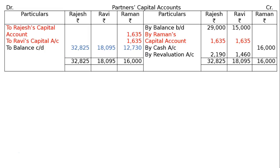Raman's capital totalling is Rs. 16,000, out of which the goodwill premium deducted for Rajesh and Ravi is because he is not paying in cash. If it were mentioned that the amount would be transferred to a current account, nothing would appear on the debit side; instead a red ink entry by Raman's Current Account of Rs. 1,635 appears for Rajesh and Rs. 1,635 for Ravi.